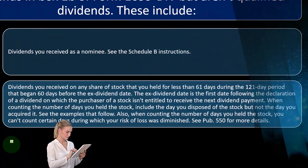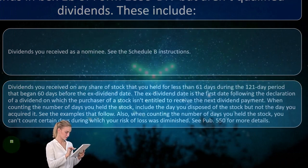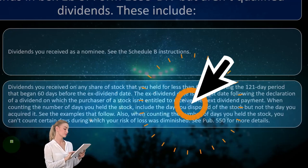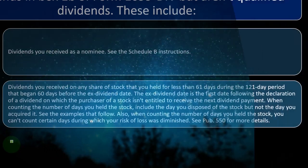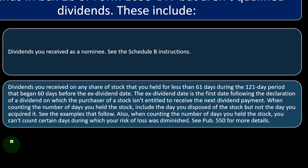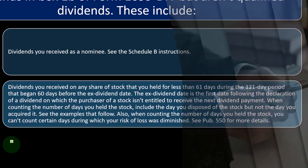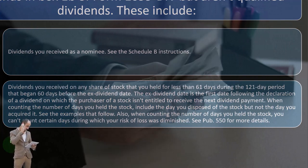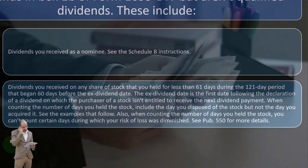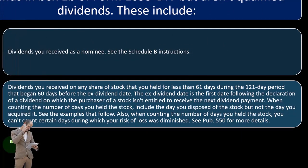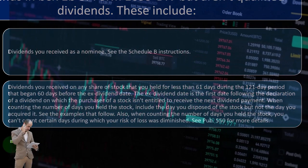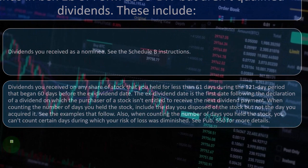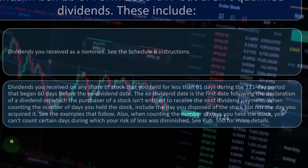Dividends you received on any share of stock that you held for less than 61 days during the 121-day period that began 60 days before the ex-dividend date. The ex-dividend date is the first date following the declaration of a dividend on which the purchaser of a stock isn't entitled to receive the next dividend payment. When counting the number of days you held the stock, include the day you disposed of the stock, but not the day you acquired it. You can't count certain days during which your risk of loss was diminished. See Publication 550 for more details.